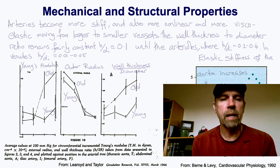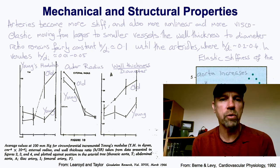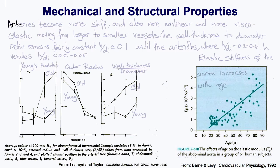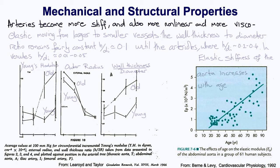This time we'll talk about the consequences of the mechanical and structural properties of the arteries on blood flow dynamics. In general, as we move along the aorta, the arteries become more stiff, but also more nonlinear in their stress-strain relation, and more viscoelastic as we go from the aortic track to the smaller vessels.